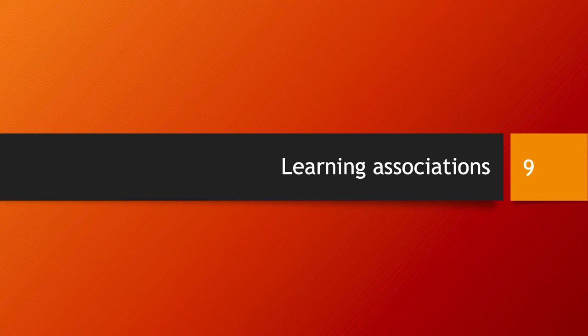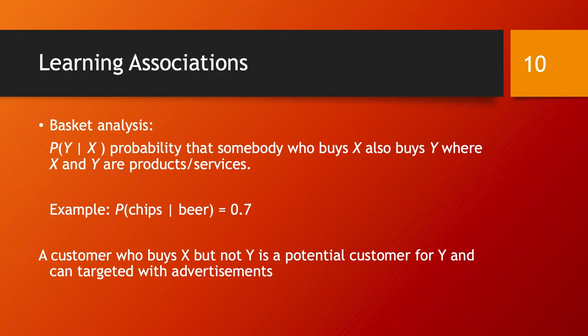Here is one type of machine learning problem: learning associations. The problem in this case is that you would like to know if there has been a certain behavior, what other behavior is typically associated with it?